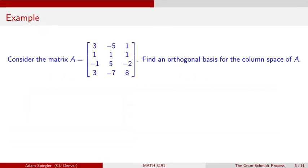The example I want to look at involves the subspace generated by the column space of matrix A. Matrix A is a 4×3 matrix where the first column is (3, 1, −1, 3), the second column is (−5, 1, 5, −7), and the third column is (1, 1, −2, 8). The column space of this matrix is going to be some subspace of the codomain, which is R4.